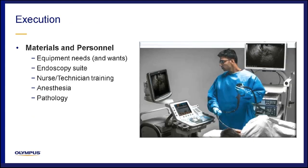The first vital step of execution is organization of materials and personnel. Equipment needs and wants, including your accessories, should be defined. Your endoscopy suite setup, as well as potential block time, should be established. Nurses and technicians trained, and anesthesia support can be requested. Pathology support, which in my experience has been indispensable, can be tremendously helpful. If you can have an in-room cytotechnician or pathologist available for ROSE — rapid on-site evaluation — you can ensure adequate sampling and accurate diagnosis with the least number of needle passes. You may also find a pathologist with a passion for pancreatic biliary or GI pathology, which can be a springboard to building a strong relationship extending into tumor boards and other educational ventures.